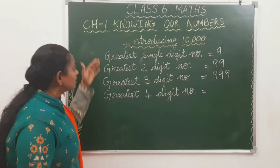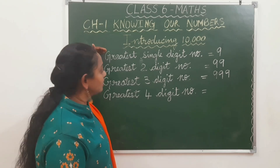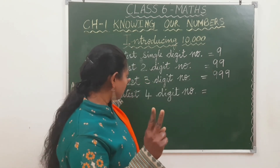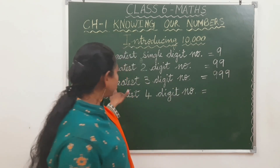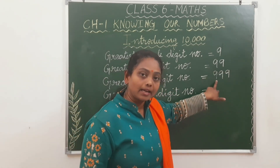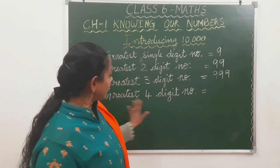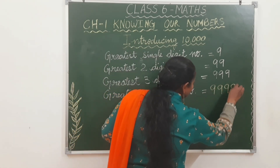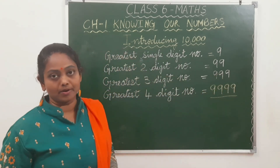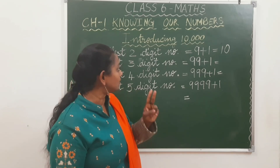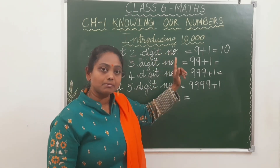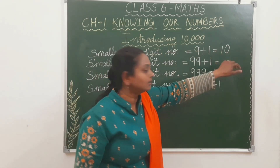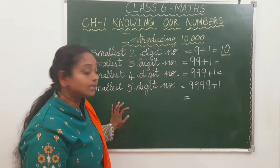Now we are going to introduce 10,000. Let's start with the greatest single-digit number. What is the greatest one-digit number? Nine. Next, the greatest two-digit number is 99. The greatest three-digit number is 999. The greatest four-digit number is 9,999. If you add 1 to 9, you will get the smallest 2-digit number, that is 10.